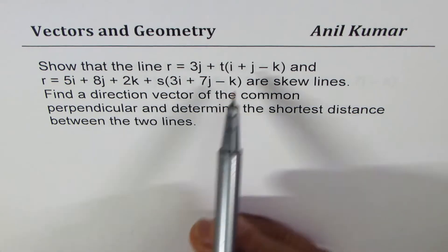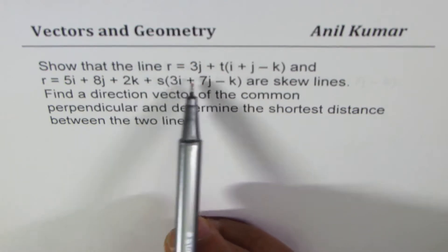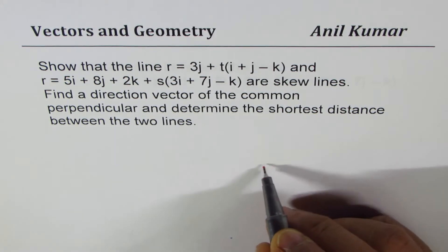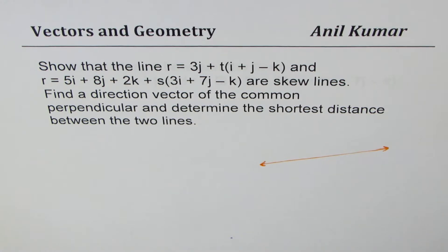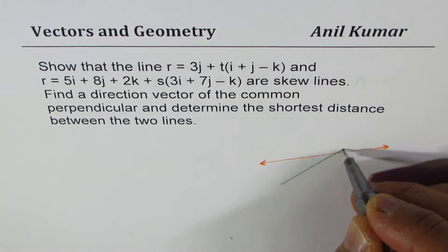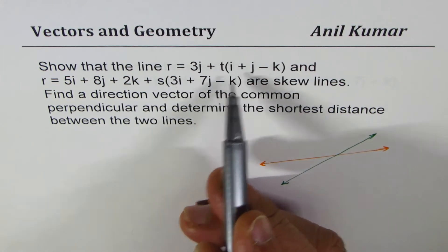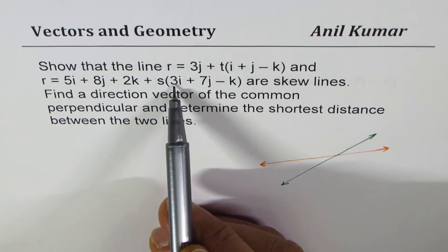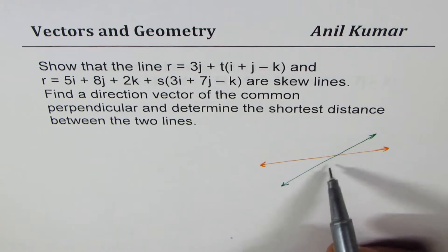Let's try to understand this question first. We are given two lines. Let us say these lines lie on the plane of this paper. If two lines are on the same plane and they are not parallel, they will definitely intersect. You can see from their directions that they are not parallel — the direction is (1, 1, -1) and (3, 7, -1), which is not a scalar multiple, so they are not parallel.